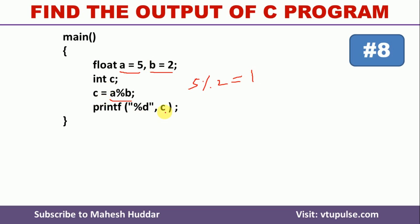And it should be displayed here. So the expected answer in this case is 1, but what we are getting is the error message: illegal use of floating point in function main. So why are you getting this particular error?